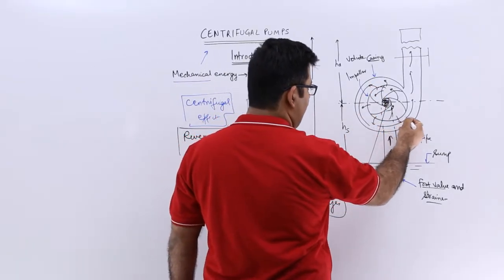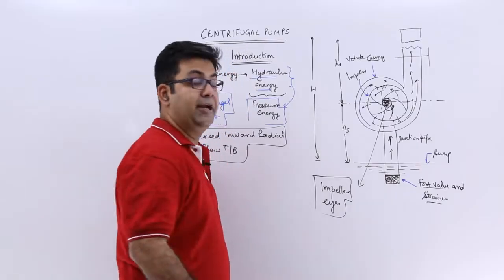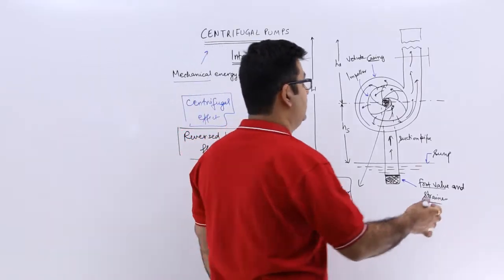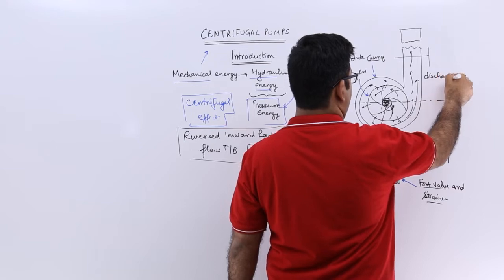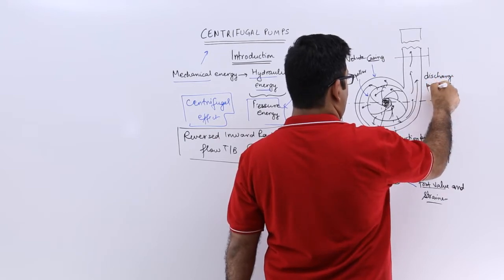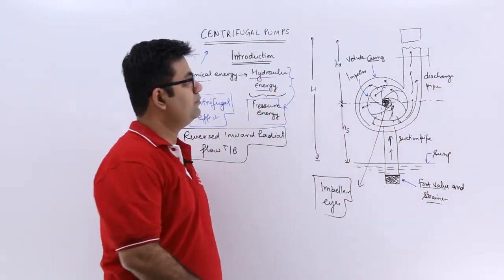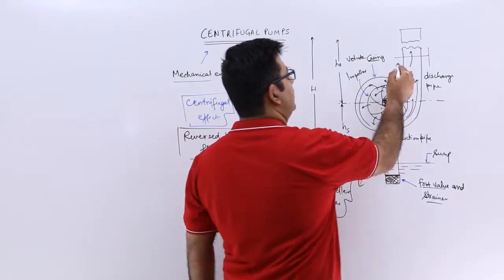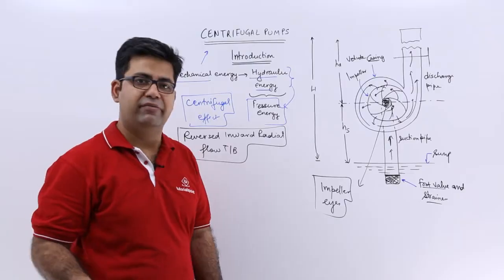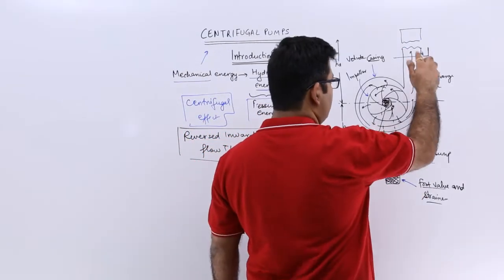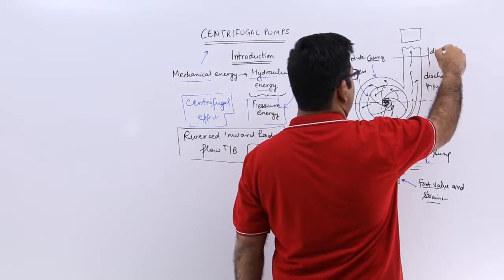And from this volute casing, it comes out and goes out like this into the discharge pipe. So this is the discharge pipe. Now you have a valve over here, this can be called the outlet valve to control the discharge. So this is the discharge valve.